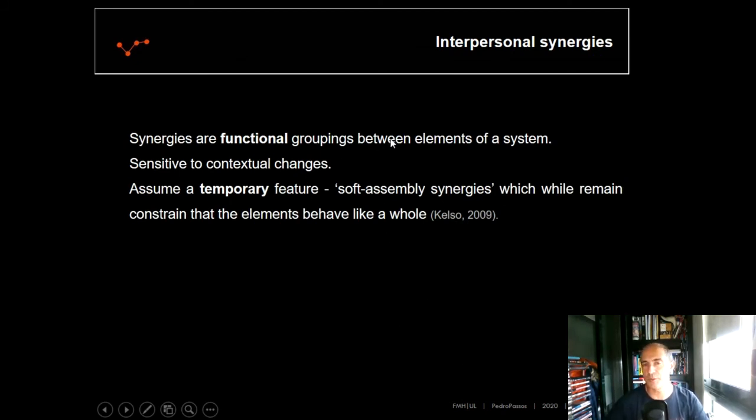So synergies are functional groupings between elements of a system that are sensitive to contextual changes. That's why they are temporary. And because of these sensitive to contextual changes which become temporary, we can call them soft assembly synergies which will remain, which while remain, they will constrain that the elements of the system behave like a whole.